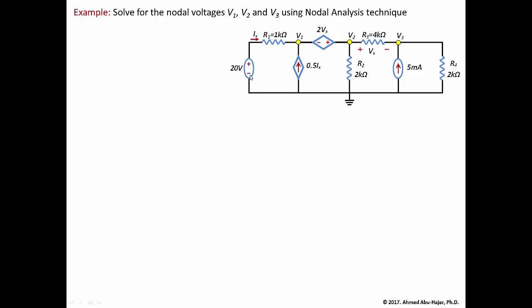This voltage here is 20 volts, those are the unknown nodal voltages, and this is the reference node at zero volts. Before we do anything, we need to define vx in terms of the nodal voltages. Looking at the circuit, vx is located where the plus polarity is at node v2 and the negative polarity is at v3.